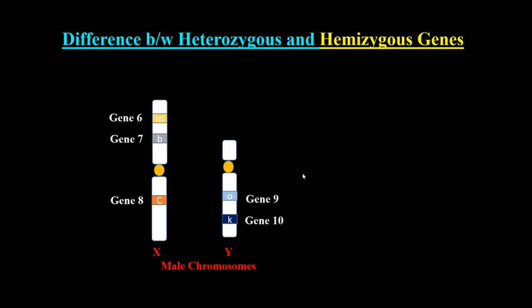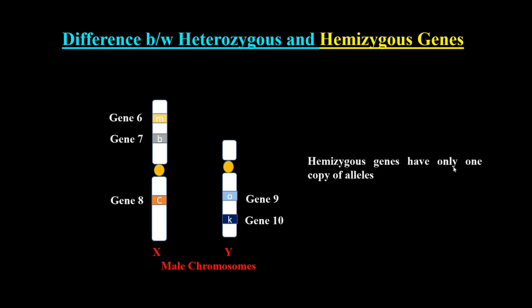The main difference between the heterozygous and hemizygous condition is that in the heterozygous condition, two alleles of a gene are different from each other. But in the hemizygous condition, the gene has only one allele. This is the main difference between heterozygous and hemizygous conditions.